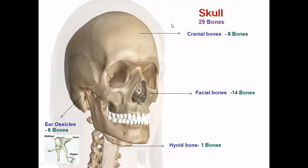The cranial bone is the large, hollow, rounded part of the skull, formed of eight bones. It consists of a cavity called the cranial cavity, where the brain is located. As you can see in the picture, the cranial bone forms the upper part, and inside it the cranial cavity is present where the brain is located.